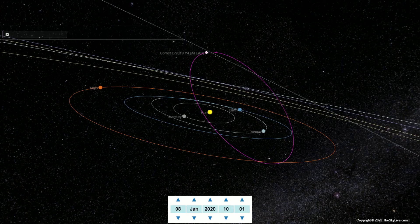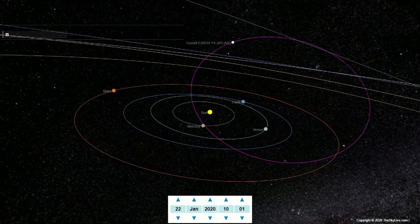During January to March 2020, the comet will be located in the constellation of Ursa Major.